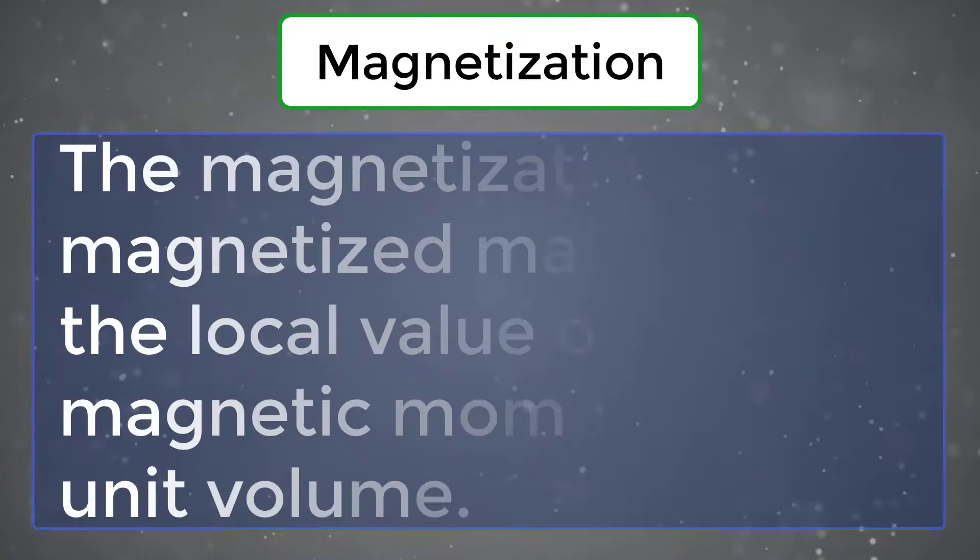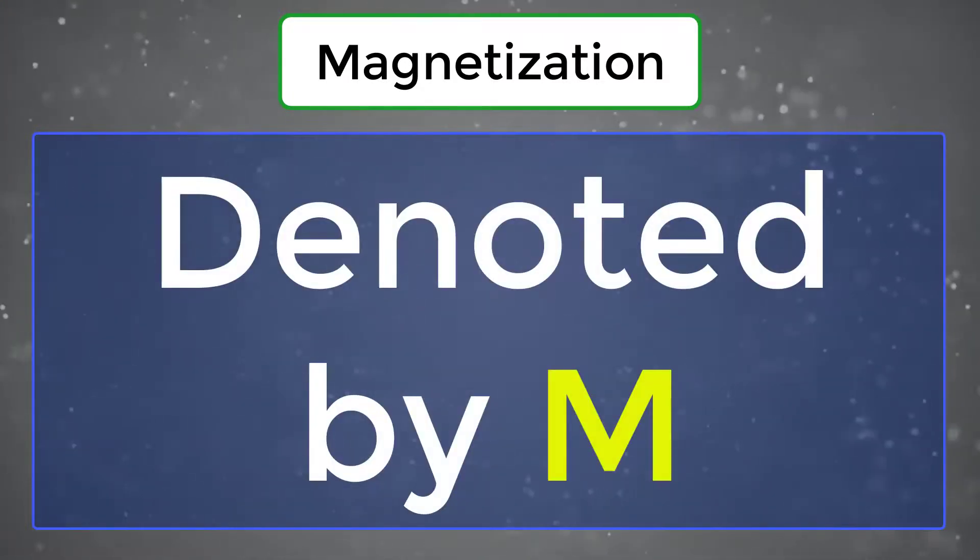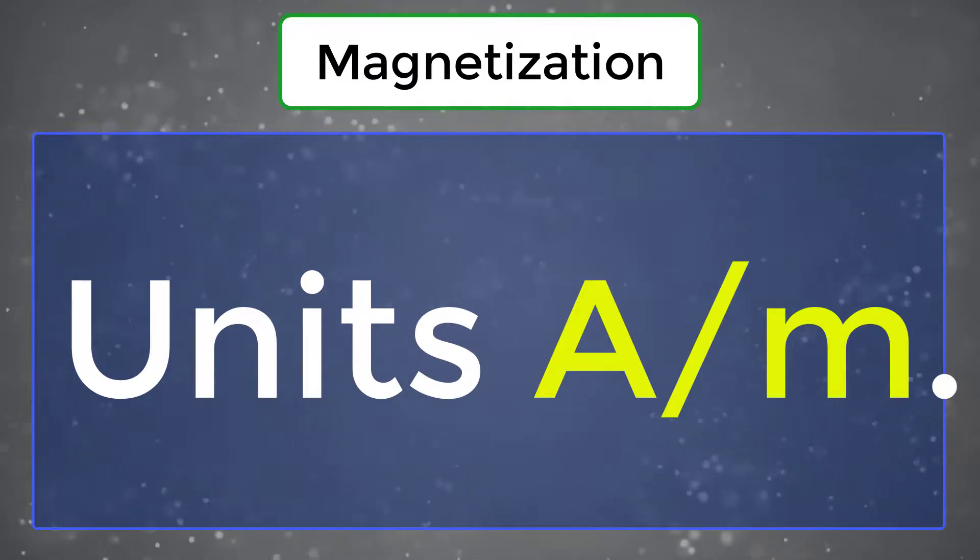Magnetization. A magnetization of a magnetized material is a local value of its magnetic moment per unit volume, usually denoted M with units ampere meter.